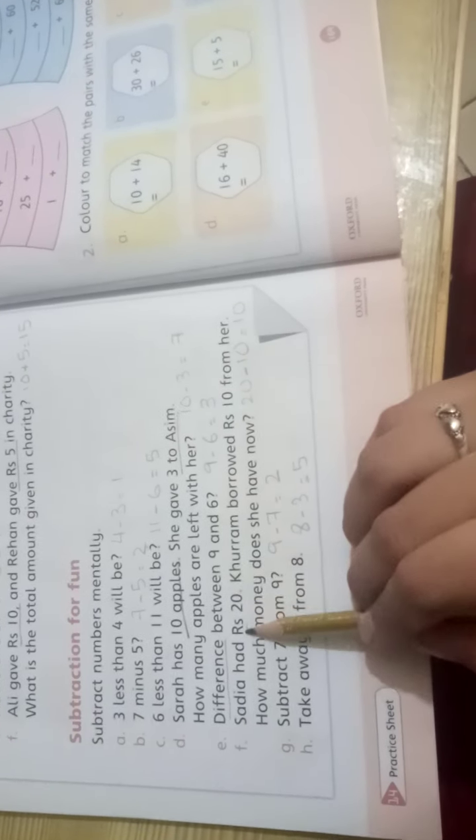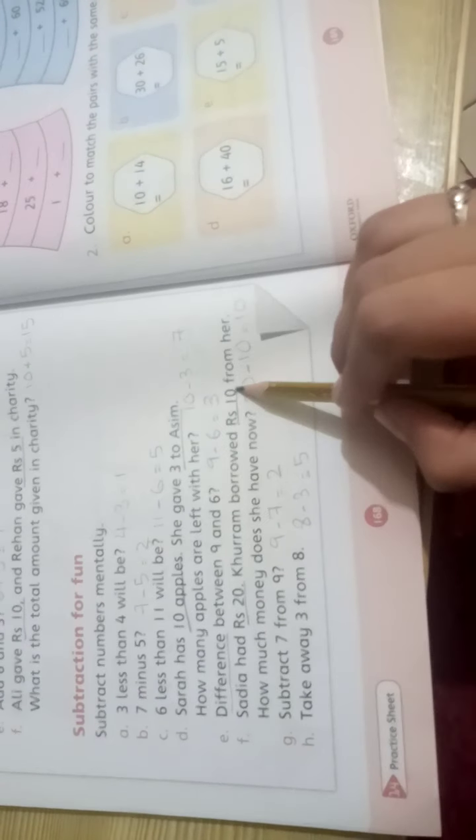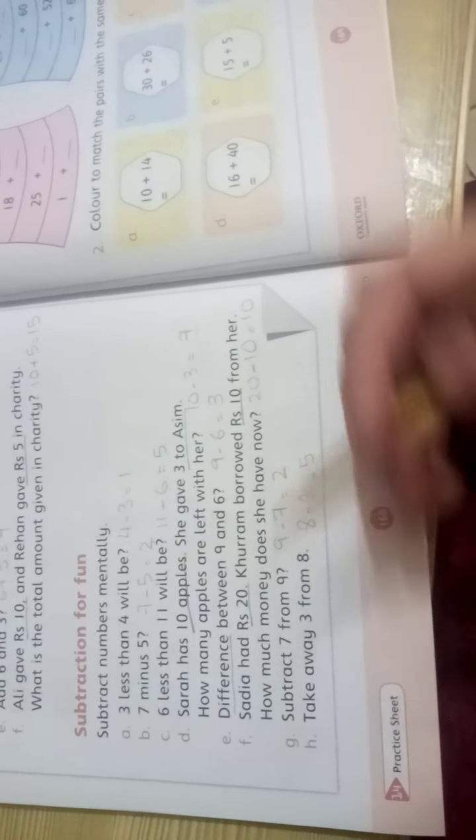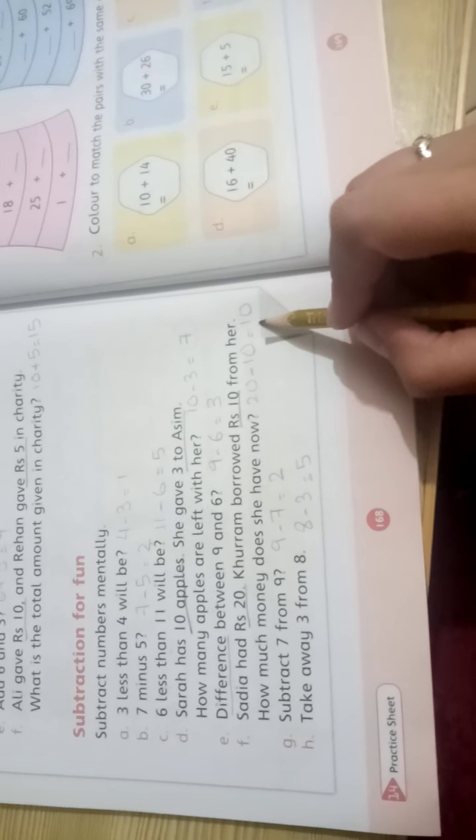Difference between means subtract. 9 minus 6 equals 3. Sadia had 20 rupees. Khuram borrowed 10 rupees from her. Sadia had 20 rupees and Khuram took 10. How much money does she have now? 20 minus 10 equals 10. Sadia has 10 rupees left.